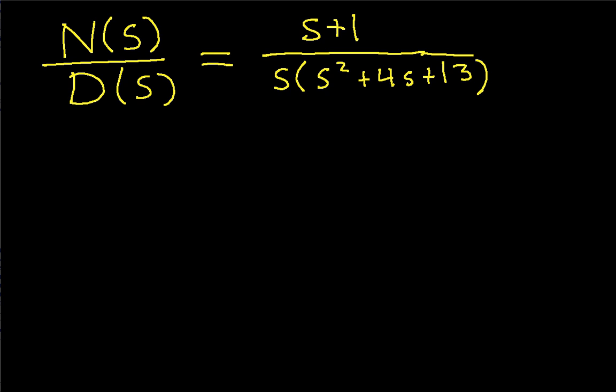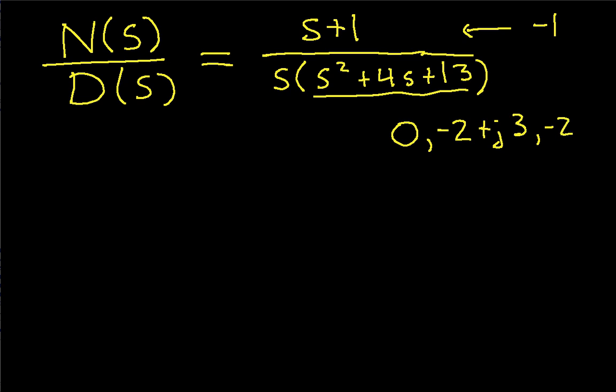The roots of the numerator — the values of s that make the numerator zero — there's only one, and it's equal to minus 1. The roots of the denominator, the values of s that make the denominator zero, are 0, minus 2 plus j3, and minus 2 minus j3. So this quadratic factor has complex roots.